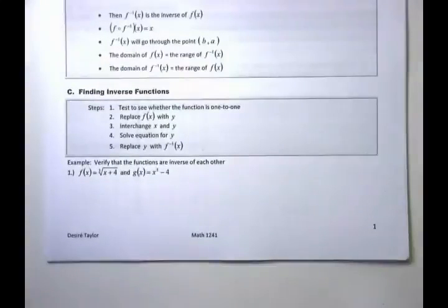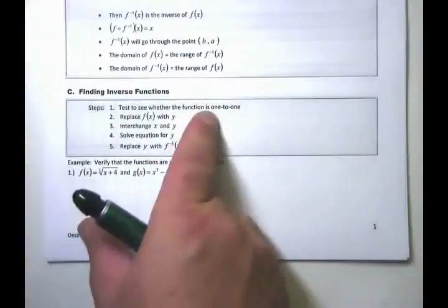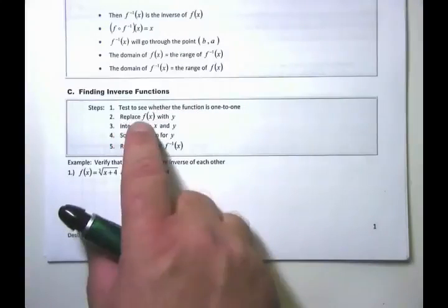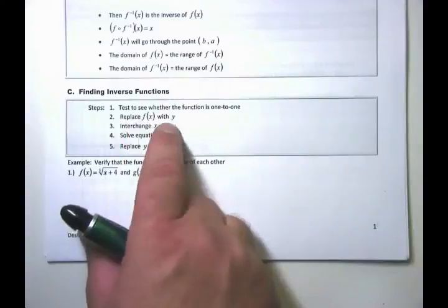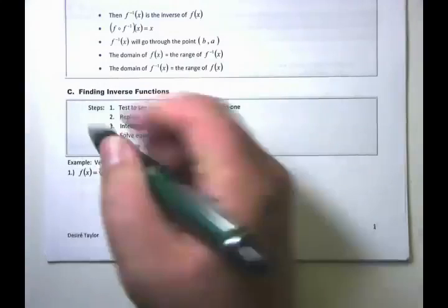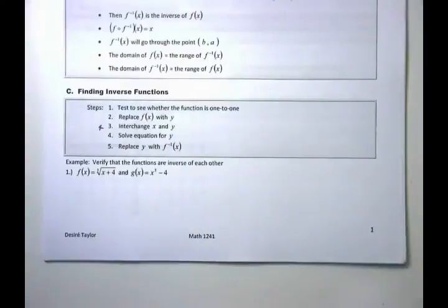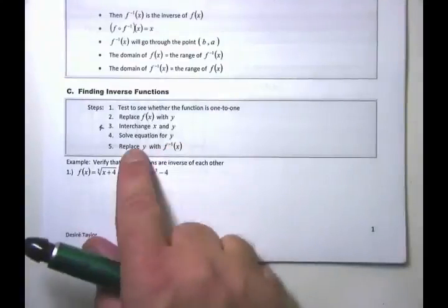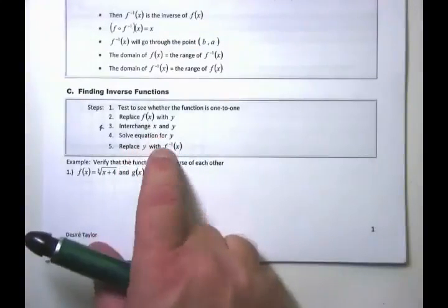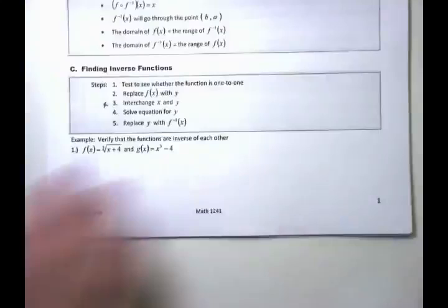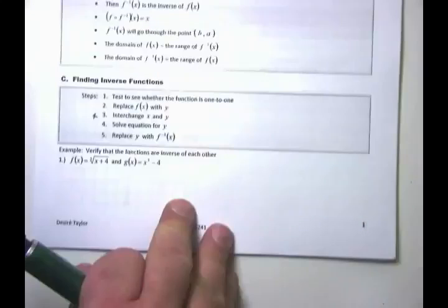There are five steps to finding an inverse function. Step one: make sure the function is one-to-one — if not, it has no inverse. Step two: replace the function notation with Y to make the math easier. Step three — the most important step — interchange or switch the X and Y coordinates. Step four: solve for Y. Step five: replace Y with F inverse of X to declare the inverse function. Let's look at examples.